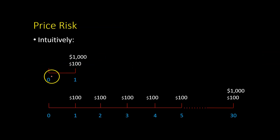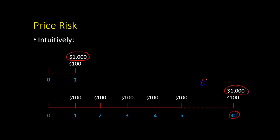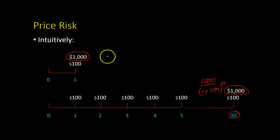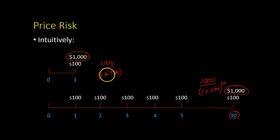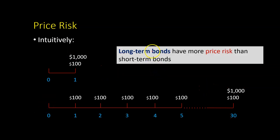Intuitively speaking, for short-term bonds, you get a major chunk of the cash flow rather sooner compared to long-term bonds, in which you get a major chunk of the cash flows much later. So when we're doing our discounted valuation, the $1,000 for the long-term bond gets discounted at whatever the yield to maturity is compounded over 30 years, whereas for the short-term bond, that $1,000 gets discounted just one year from now. So for any yield, compounded 30 times over, it has a much bigger impact at time period zero. And so that is why we say that long-term bonds have more price risk than short-term bonds.